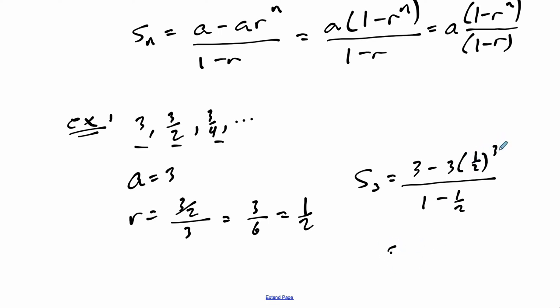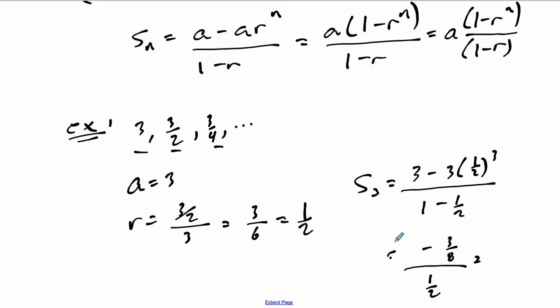What does that get us? Well, 1 half to the third is 1 eighth, so this is 3 minus 3 times 1 eighth, 3 eighths, over 1 minus 1 half is 1 half. 3 is really the same thing, to get the common denominator is 24 over 8. 24 over 8 minus 3 over 8 is 21 over 8. Divide it by 1 half means times 2 over 1, so this is 21 over 4, which is 5.25. That's exactly what we get when we add these three things.